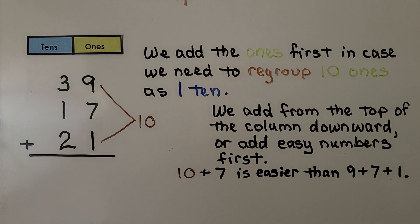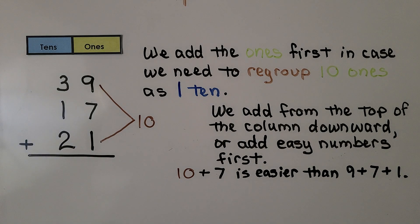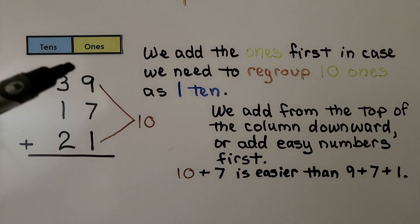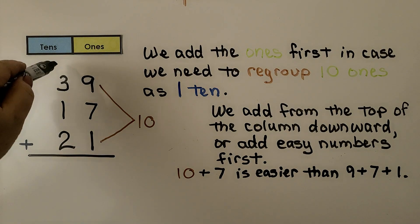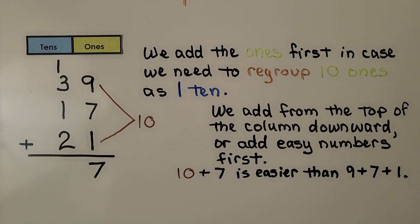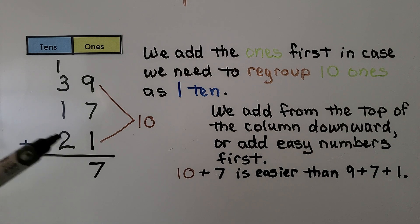Here we have 39 plus 17 plus 21. We add the ones first in case we need to regroup 10 ones as 1 ten. I see a 9 and a 1, that makes a 10. We can do 10 plus 7, that's 17. We regroup the 10 and put the 7 in the ones place. Now we have 3, 4, 5, 6, 7.